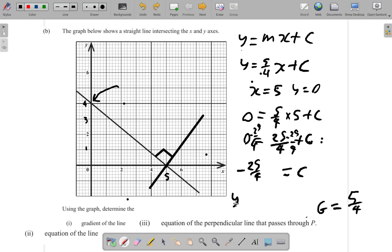What we have is Y equal M, which is 5 over 4X plus negative 25 over 4. Might as well write minus 25 over 4.